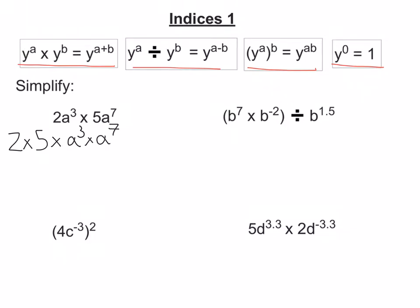So 2 times 5 is 10. And when we're multiplying terms with indices together, we just add their powers together. So this is going to be a to the power of 3 plus 7. So this is going to be 10a to the 10.